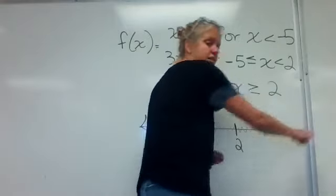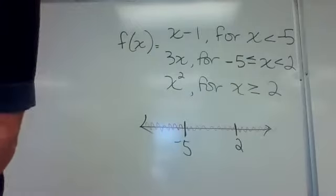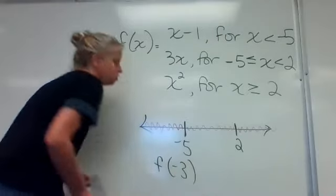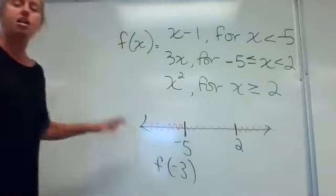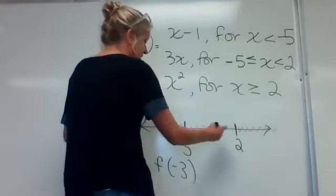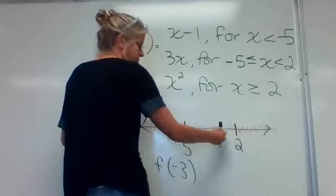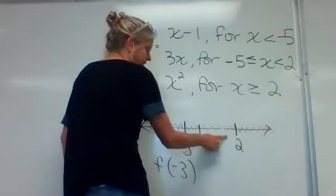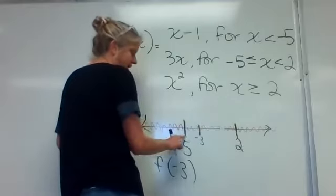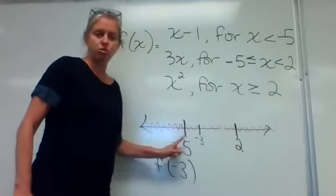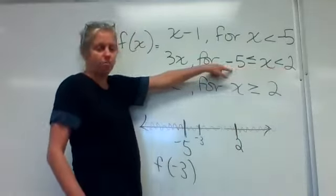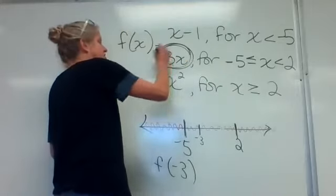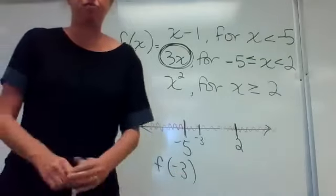It says identify the expression that should be used to find f of negative three. Where would negative three come in on this number line? Negative three is in between negative five and positive two, so it falls in this piece right here between negative five and two. Which means I would use the 3x part of the function to find f of negative three.